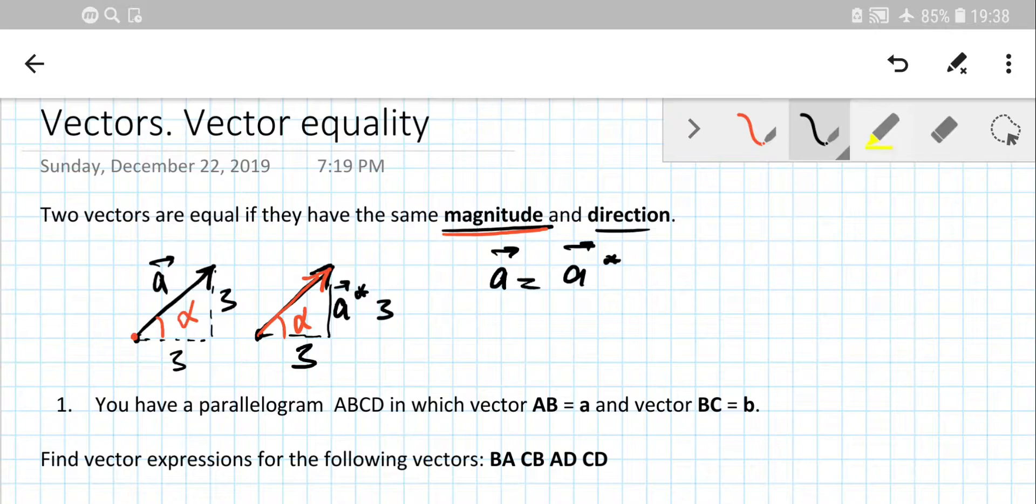So what about the zero vector? What if the vector's starting point and ending point coincide? It's simply a dot, right, or just a point. In this case we have a zero vector.